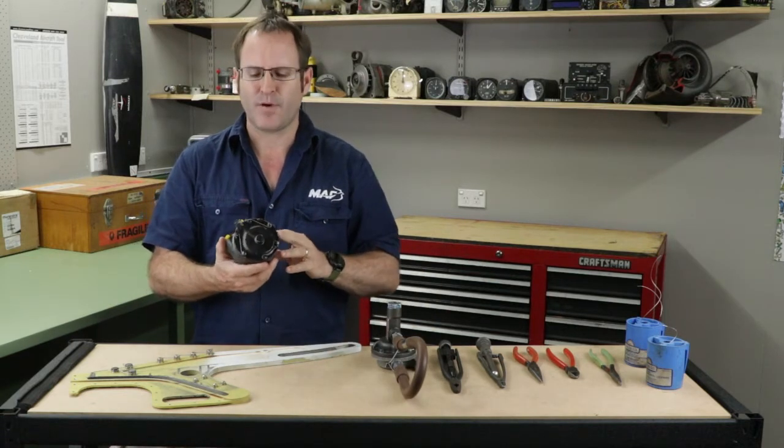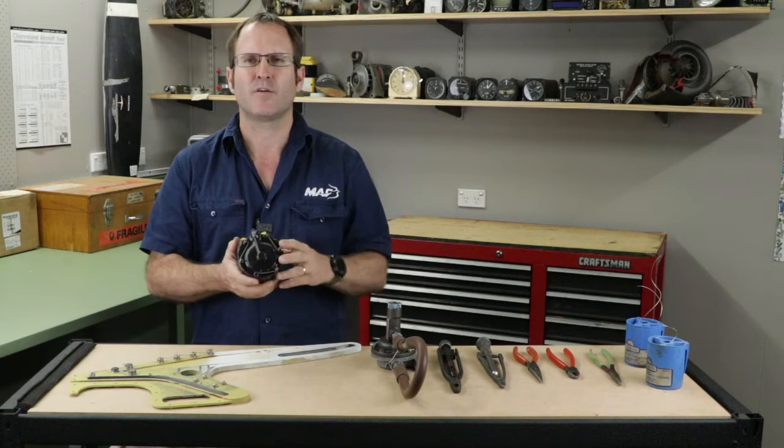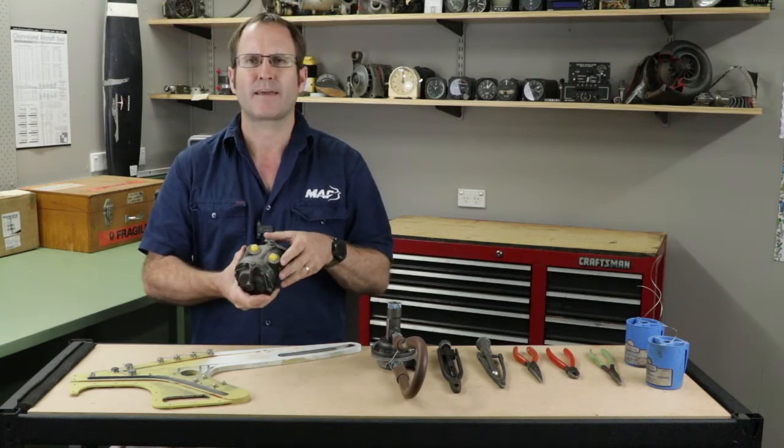Here is another example of a vacuum pump and the end case are all wire locked as well as a couple of the blanking plugs.